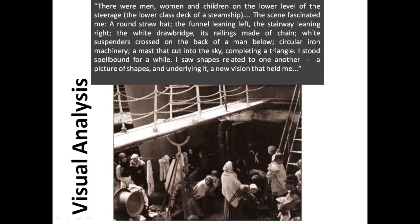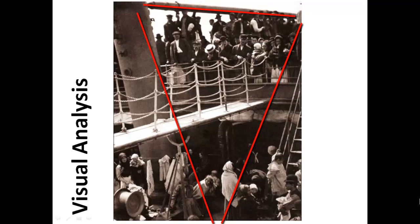Alfred Stieglitz himself said about this image: 'There were men, women and children on the lower level of the steerage, the lower class deck of a steamship. The scene fascinated me. A round straw hat, the funnel leaning left, the stairway leaning right, the white drawbridge, its railings made of chain, white suspenders crossed on the back of a man below, circular iron machinery, a mass that cut into the sky, completing a triangle. I stood spellbound for a while. I saw shapes related to one another, a picture of shapes and underlying it a new vision that held me.' So Stieglitz himself looked at this image very much in a visual literacy way, trying to understand it in terms of lights and darks, shapes and lines.